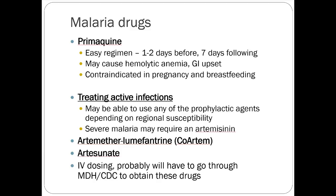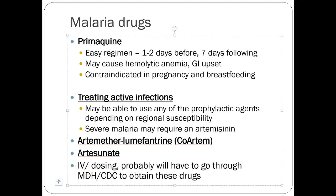Active malaria infections are unusual in the U.S. There are artemisinin-based drugs — coartem (artemether-lumefantrine) and artesunate. To obtain these drugs, you usually have to go through the CDC or your local Department of Health. They aren't available off the shelf. If you have an active case of malaria, get infectious disease involved. Don't worry about active infection treatments for the exam — they're quite rare in the United States.